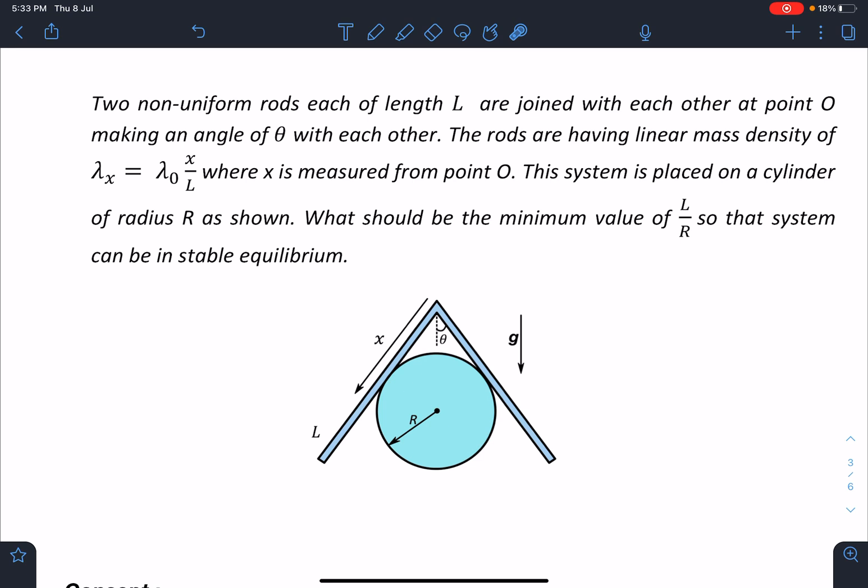The rods are having linear mass density lambda(x) equal to lambda naught x by L, where x is measured from point O. The system is placed on a cylinder of radius R as shown. What should be the minimum value of L by R so that system can be in a stable equilibrium?